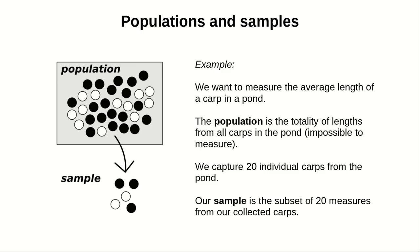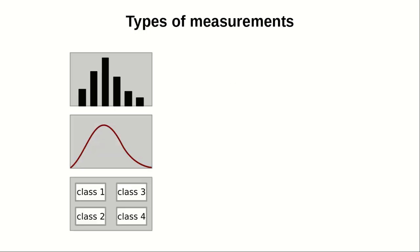And that's what we will use to try to infer, to try to know the structure of the actual population without the need of measuring all the individuals in the population. The type of measurements we can take from a sample are diverse.